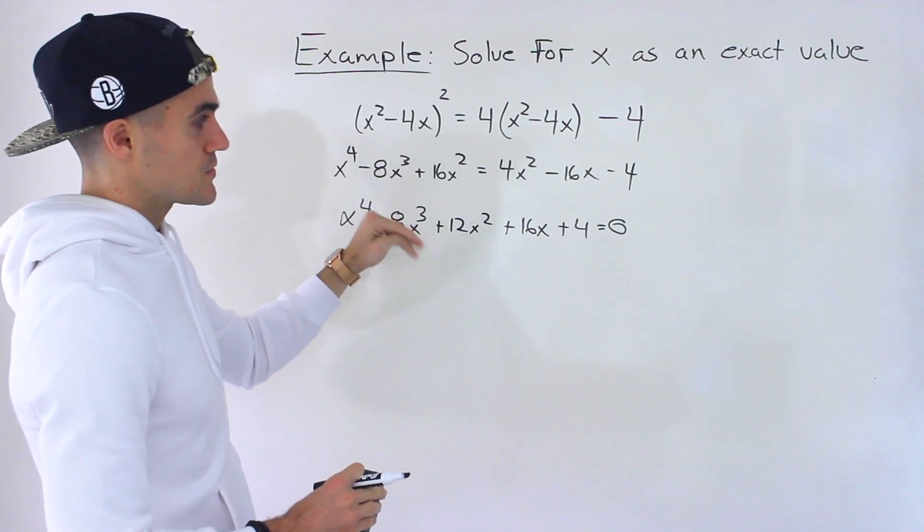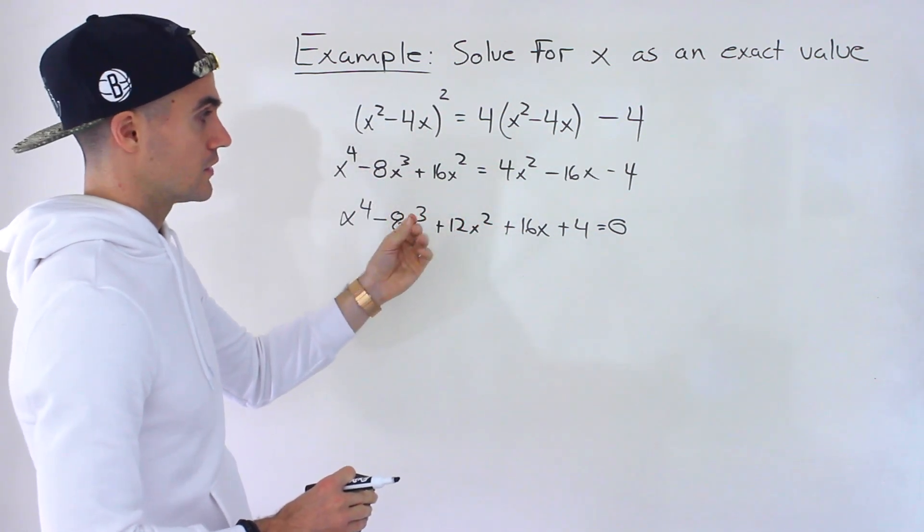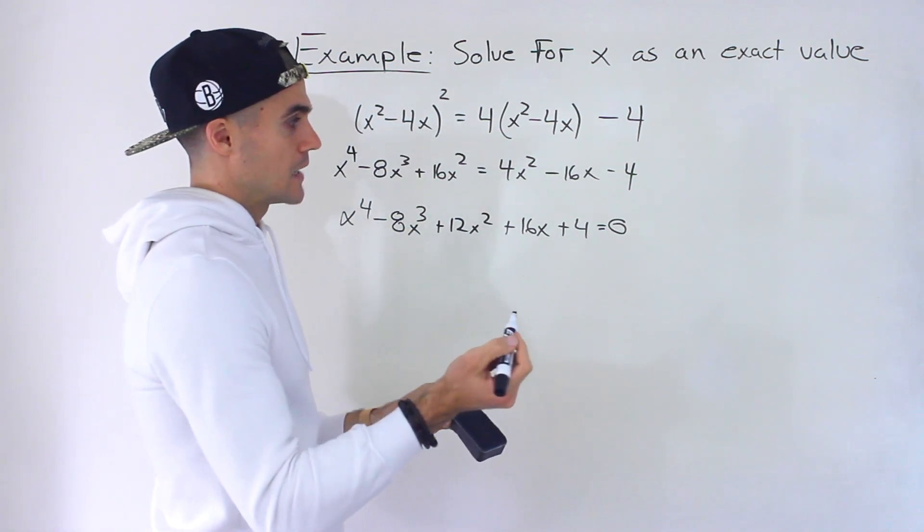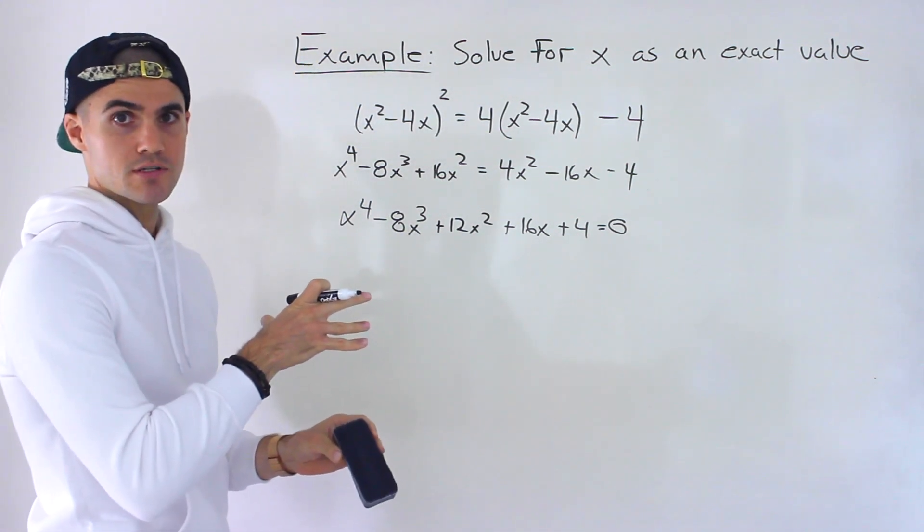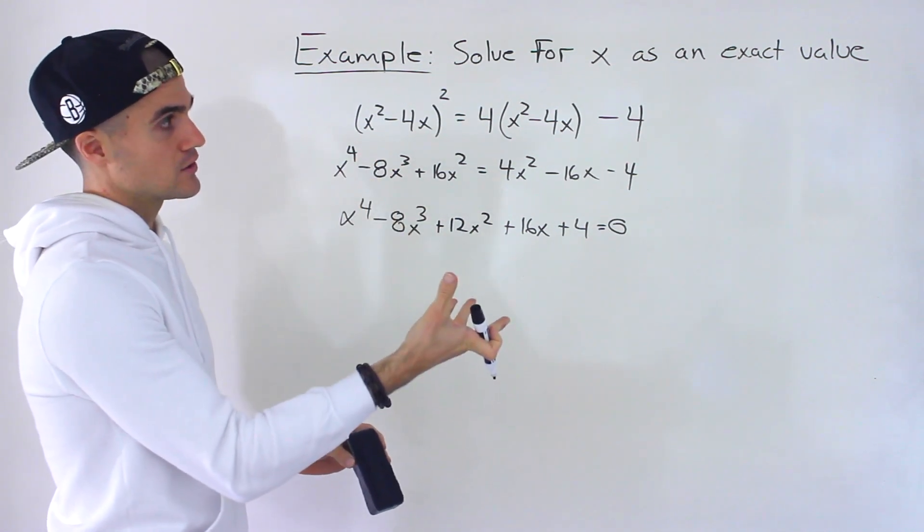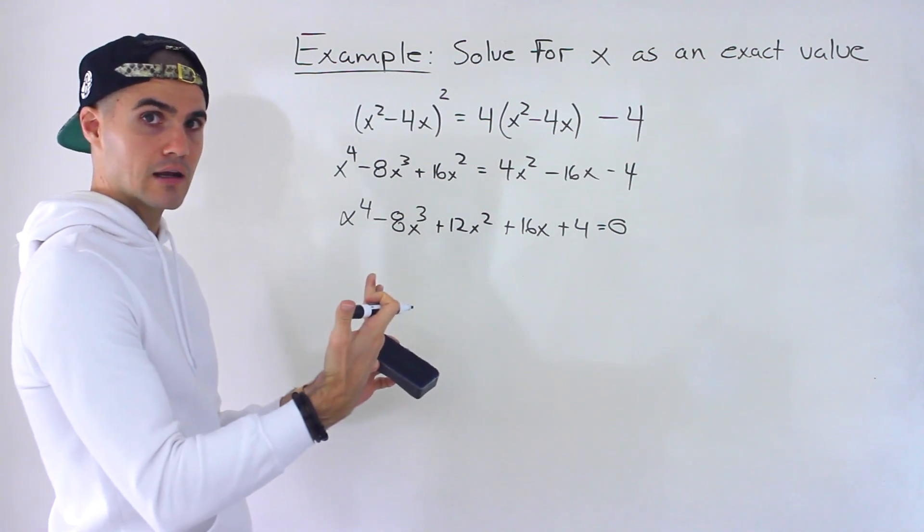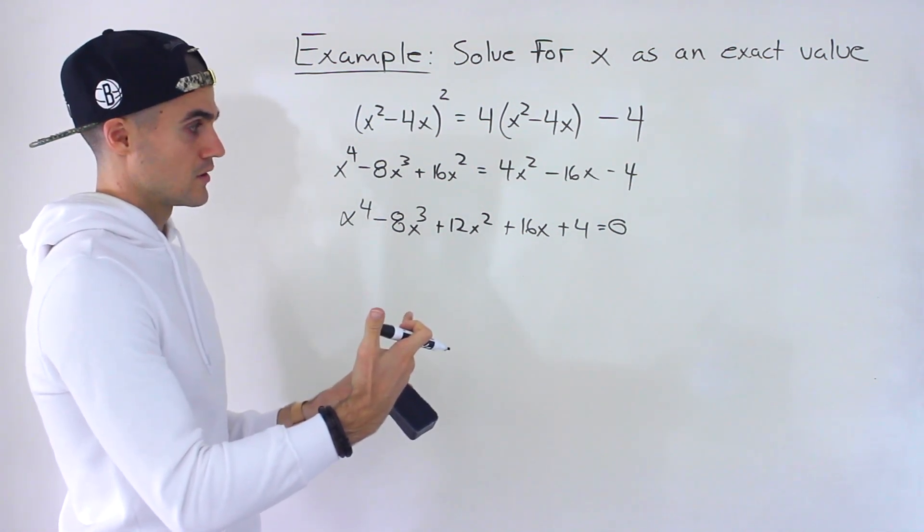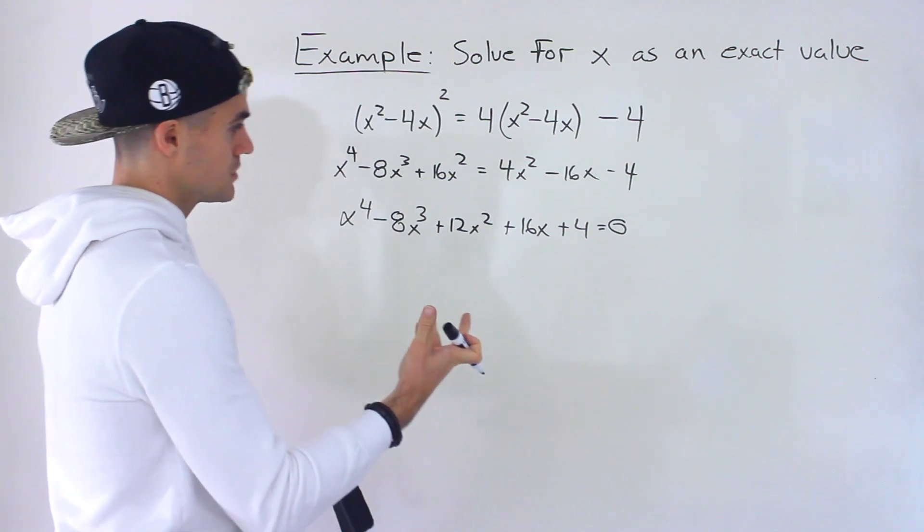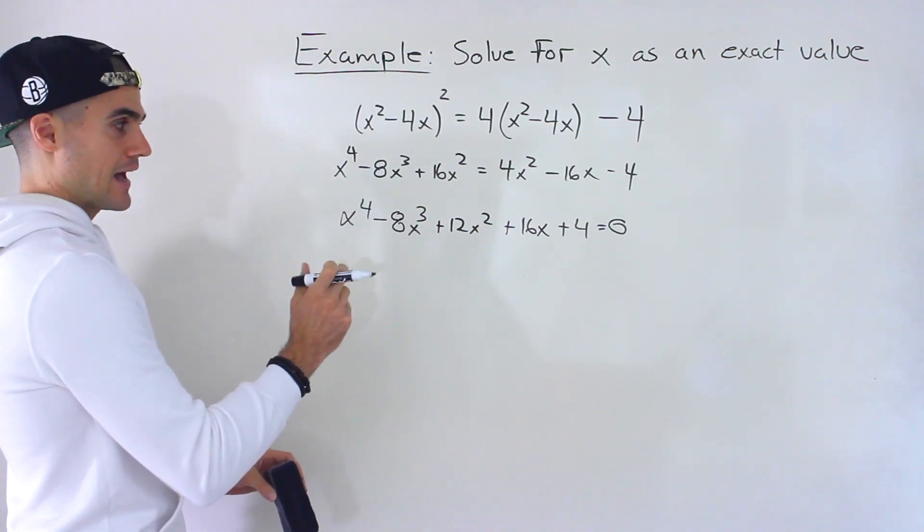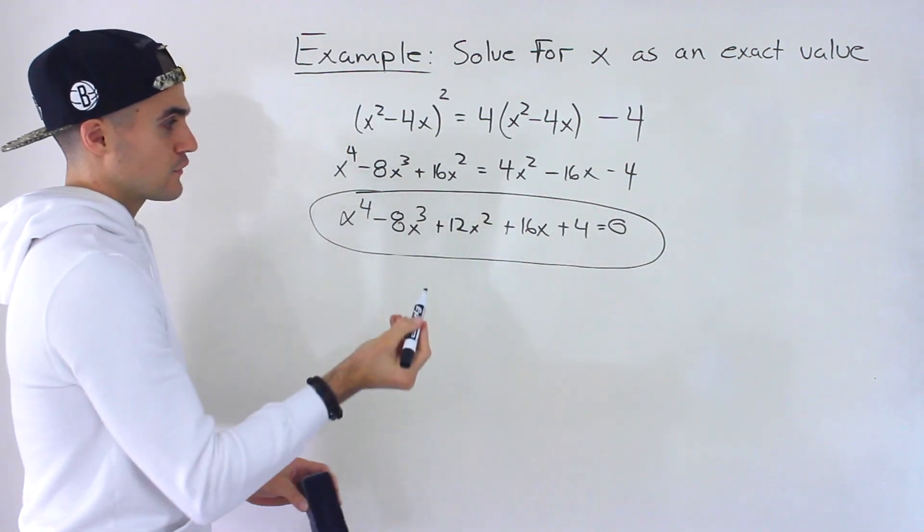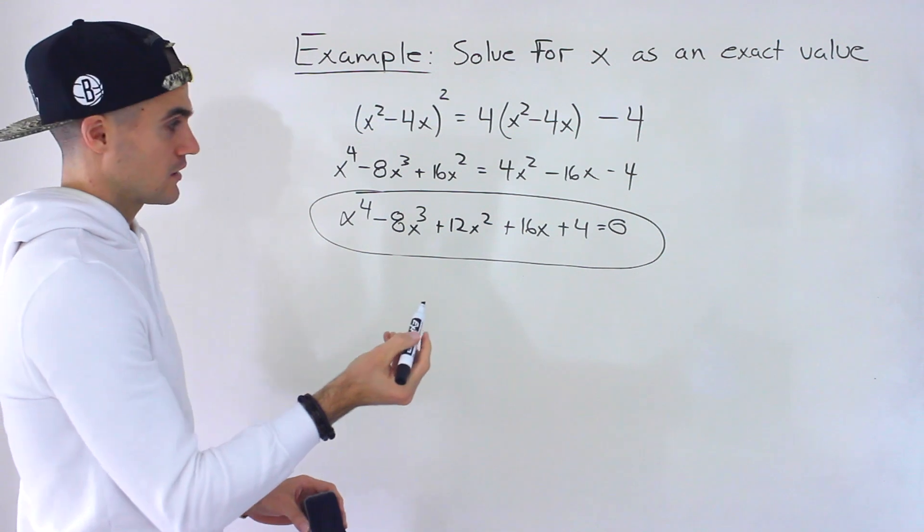The problem is what's going to happen here as a spoiler alert is there's going to be two solutions to this but they're going to be decimal solutions and in this question we have to give it as an exact value so there can't be any decimals in our solution. So it's going to be in terms of radicals it's going to be a radical expression and getting that radical expression from here is very difficult to do. You pretty much can't do it here.